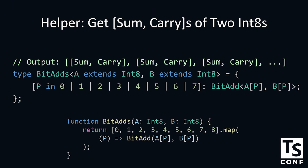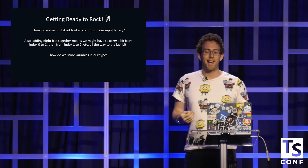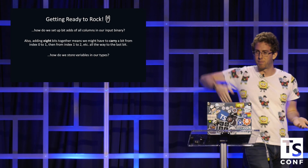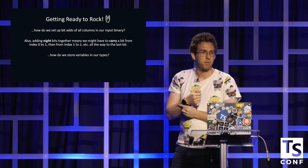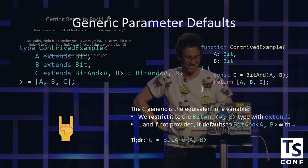We're almost there. So how do we set up the bit adds of all columns in our input bit array? We might have to carry a bit from the first to the last. If it's just 1, 1, 1, 1, 1 plus 1, 1, 1, 1, 1, then we're going to have to carry a whole bunch of stuff. So we're going to have to add variables to the type system.